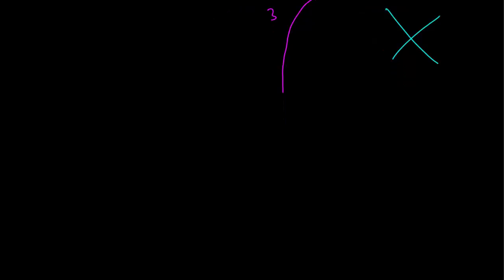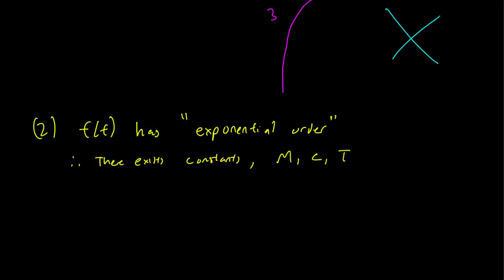So let's discuss the second condition. And this condition is really a speed limit on F. So we see that F has exponential order if there exists constants M, C, T, so that the absolute value of F(t) is less than or equal to M e^(ct) for t greater than T.